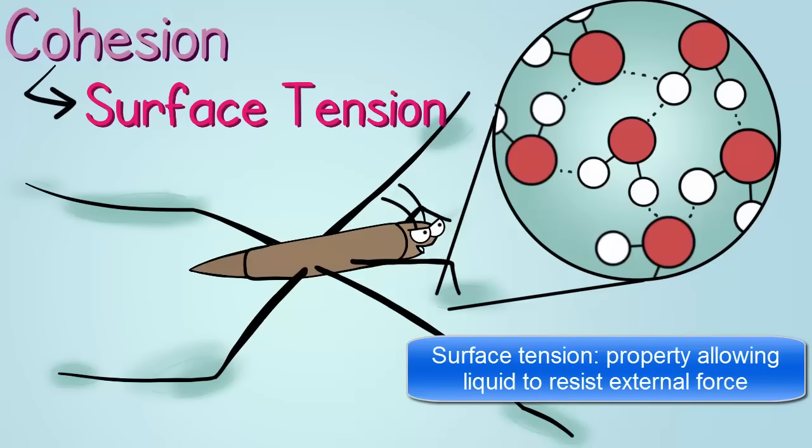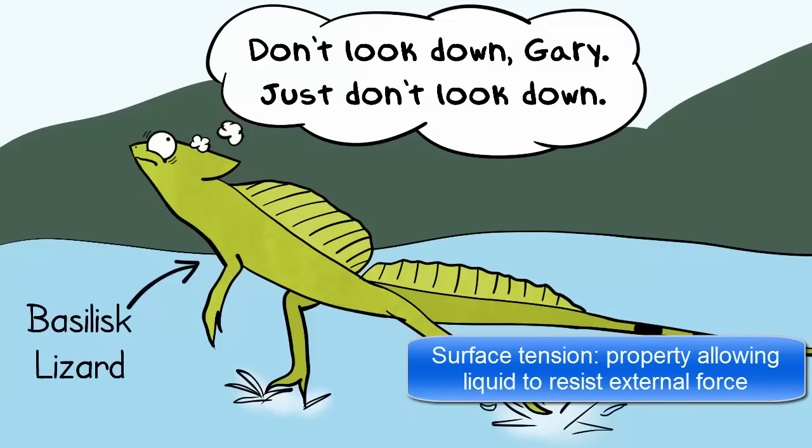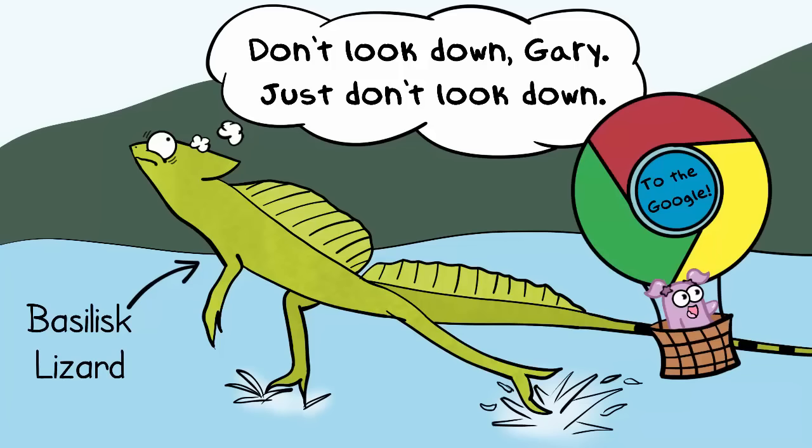Water actually has quite a bit of surface tension compared to many other liquids. And it's not just water striders that can walk on water. There are a lot of insects, spiders, and even larger animals like reptiles and some birds that have the ability to walk on water. So to the Google for that.